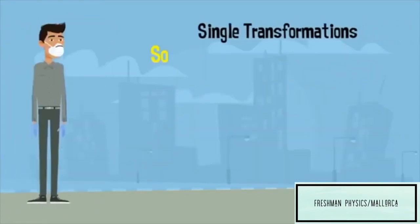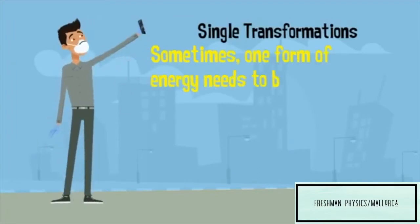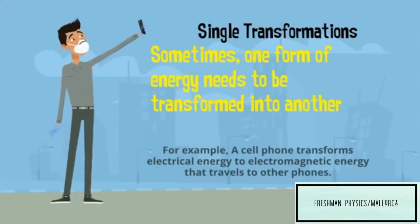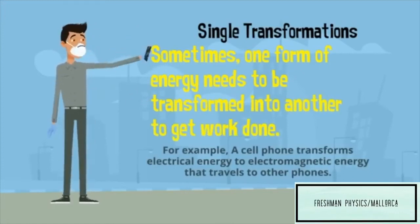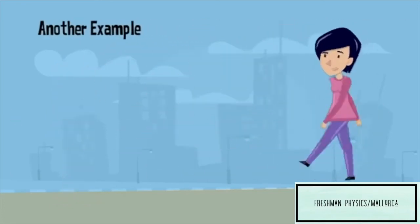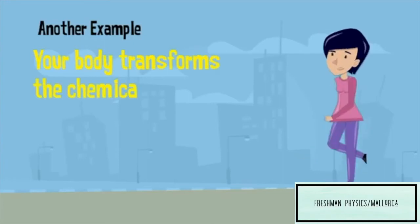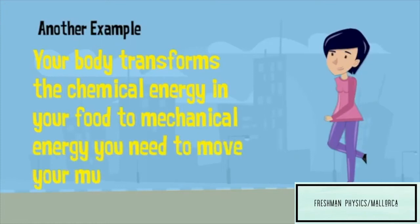There are two types of transformation. First, a single transformation. Sometimes one form of energy needs to be transformed into another to get the work done. For example, a cell phone transforms electrical energy to electromagnetic energy that travels to other phones. Another example: your body transforms the chemical energy in your food to mechanical energy you need to move your muscles.